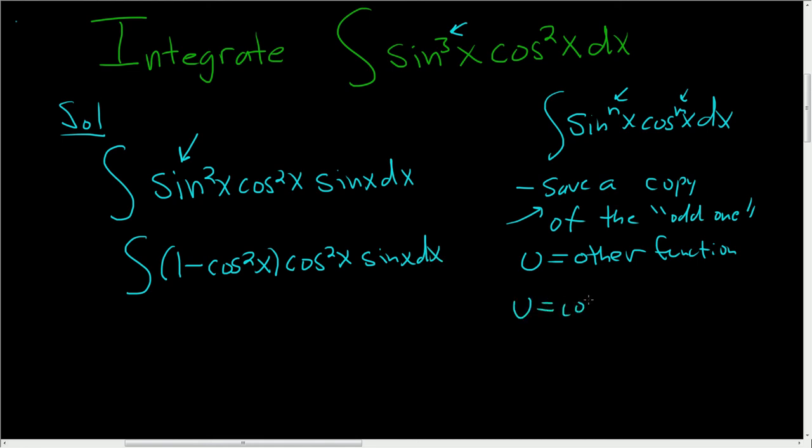So u will be cos x, and du is -sin x dx. Now we don't have a negative sine in our integral, so we multiply by -1. And now we can make the substitution. We have sin x dx right here.